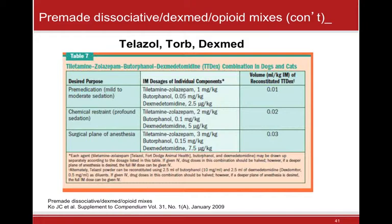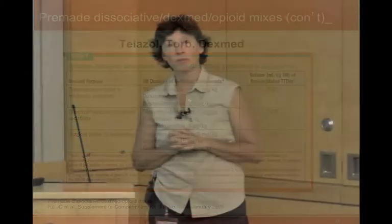For longer procedures — maybe an hour and a half, like fracture repair or enucleation — if you're going over an hour and a half of surgery, you're probably going to have to intubate and put them on iso or sevo, but you won't need as much. In terms of pain relief, the doses I've given provide about an hour and a half to three hours of surgical pain relief in dogs and cats, which is enough for average practice procedures.